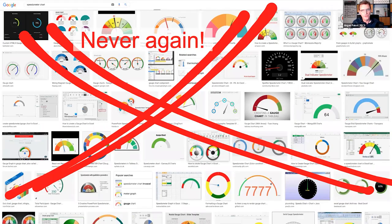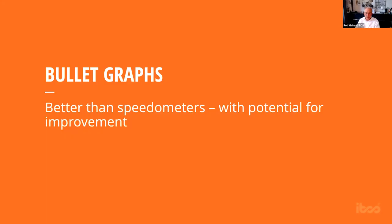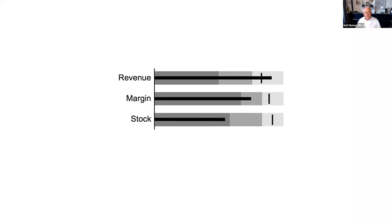There has been a suggestion by Stephen Few. He said those speedometers take too much space, so let's have a smaller, more condensed version — and this is what the bullet graph is about. What do you think about bullet graphs? They are better than speedometers. But they have potential for improvement. Stephen Few has done a great job and they're a great idea as an example of his dashboards. High information density is one of his key goals too.